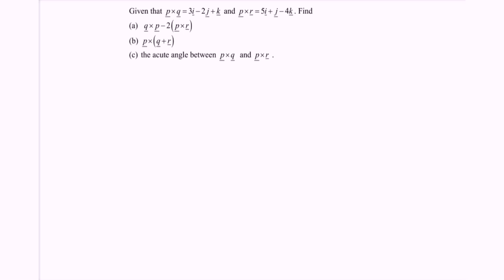Hello everyone. In this video, I'm going to discuss the example for vector. Given that we have vector P crossed with vector Q equals to 3i minus 2j plus k, and we have the vector P crossed with vector R, which is equal to 5i plus j minus 4k.